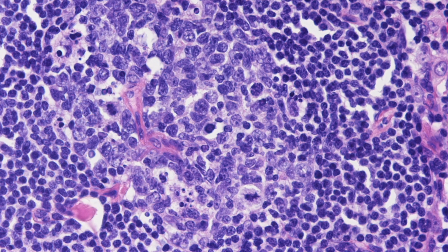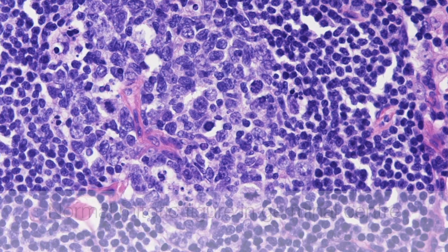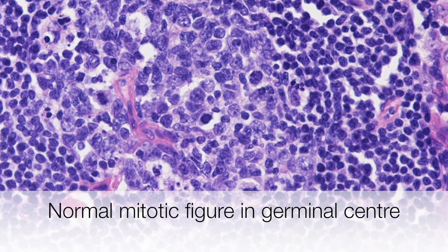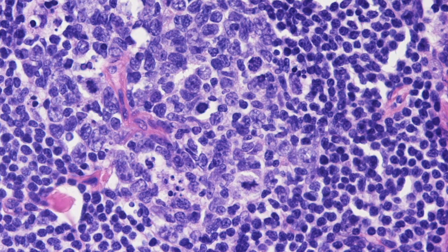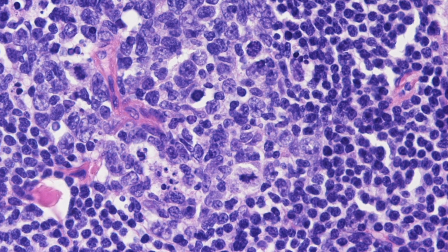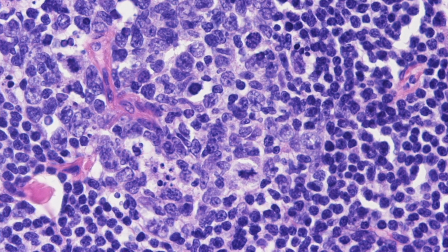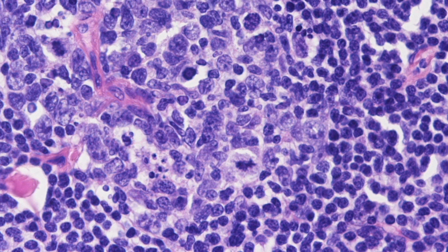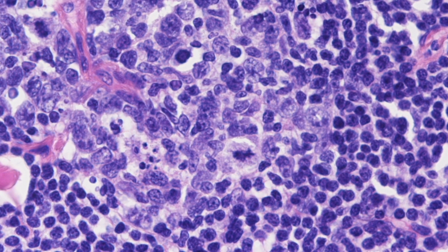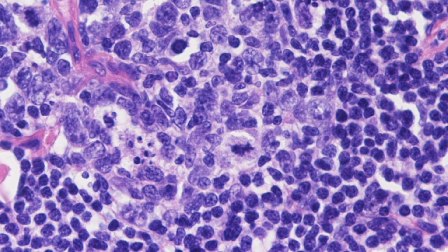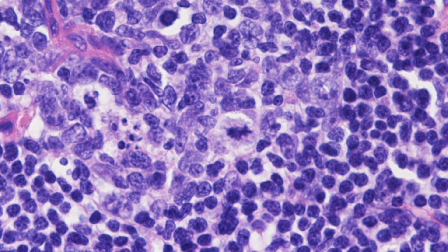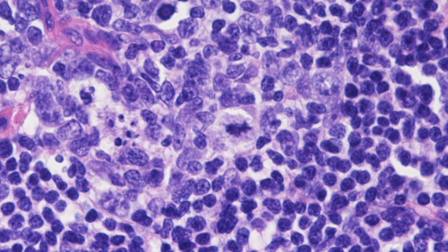Here is a germinal centre of a lymph node, which contains a normal mitotic figure. One thing that needs mentioning is that the proliferation of cells is counterbalanced by programmed cell destruction, and this is called apoptosis.